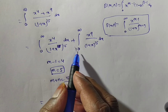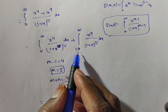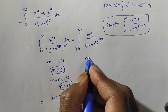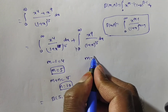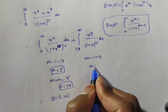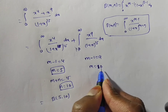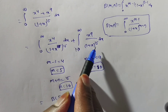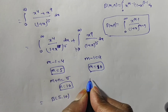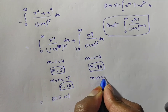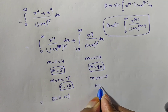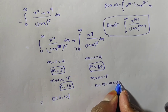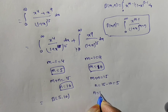For the second integral with x⁹, we have x^(m-1) = x⁹, so m - 1 = 9, giving m = 10. In the denominator, m + n = 15, so n = 15 - 10 = 5. Therefore the second integral equals Beta(10, 5).